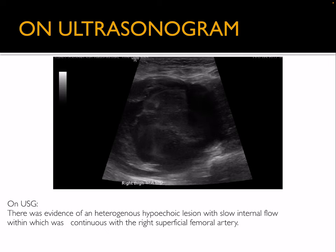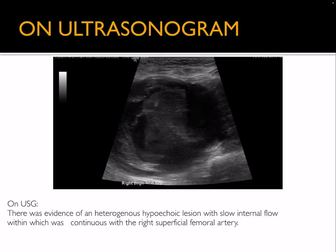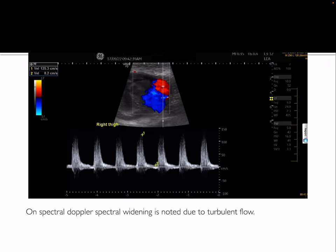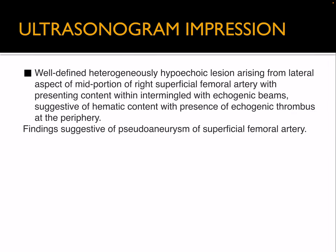The patient was later advised USG. On ultrasonogram, there was evidence of a heterogeneous hypoechoic lesion with slow internal flow within, which was continuous with the right superficial femoral artery. In this short video, there is evidence of slow flow caused by turbulence. On color Doppler, the lesion showed internal vascularity with bidirectional to-and-fro movement, the characteristic yin-yang sign. On spectral Doppler, spectral widening is noted due to turbulent flow. Ultrasonogram thus revealed a well-defined heterogeneously hypoechoic lesion arising from the lateral aspect of the mid portion of the right superficial femoral artery, with echogenic content intermixed with hematic material and a peripheral echogenic thrombus — findings suggestive of pseudoaneurysm of the superficial femoral artery.